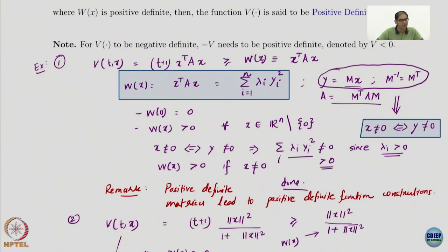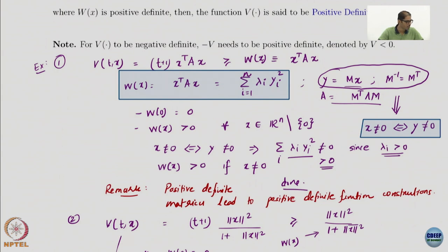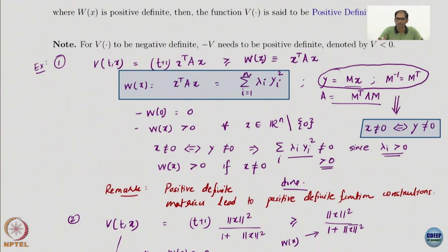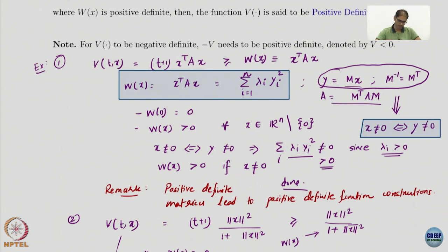The idea is: positive definite matrices lead to positive definite functions. Please do not think of this as a trivial result. In many scenarios we do use quadratic Lyapunov functions even for nonlinear systems, especially when the systems are to a large extent feedback linearizable — we will come to this in the second half of the course. A lot of electromechanical systems can be linearized via feedback, and for most of those systems we can use a quadratic Lyapunov function x transpose Px.